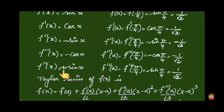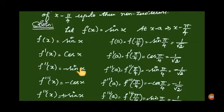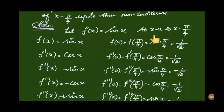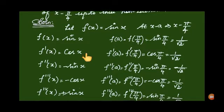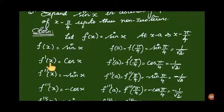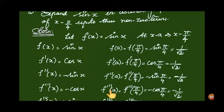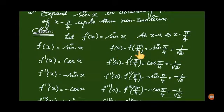Now substitute x equal to pi by 4 everywhere. We need f of a, f dash of a, f double dash of a, and f triple dash of a. Looking at the formula, substituting these values will make things more comfortable. So in place of a, substitute pi by 4.